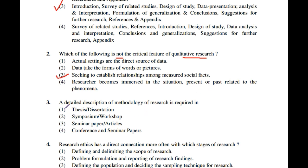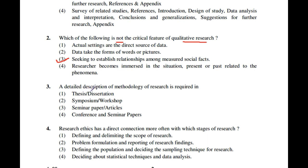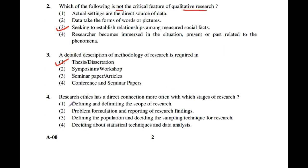Question number 3: A detailed description of methodology of research is required in — dissertation, symposium, workshop, seminar paper, articles, or conference and seminar papers? The answer is a thesis or dissertation. Question number 4: Research ethics has a direct connection most often with which stage of research? The correct option is the second one — problem formulation and reporting of research findings.